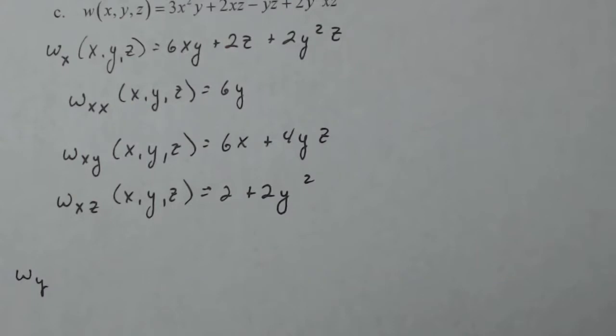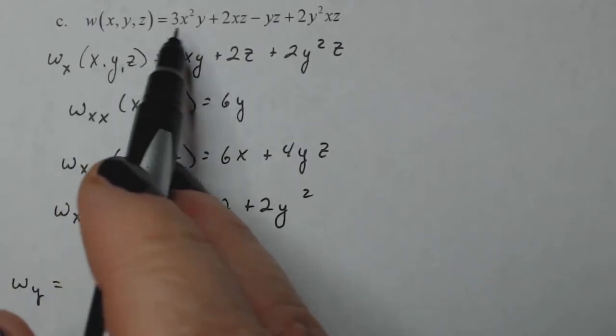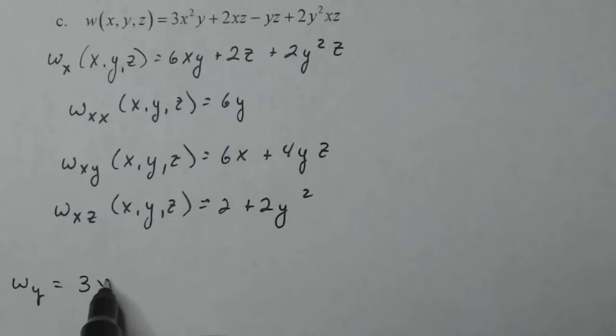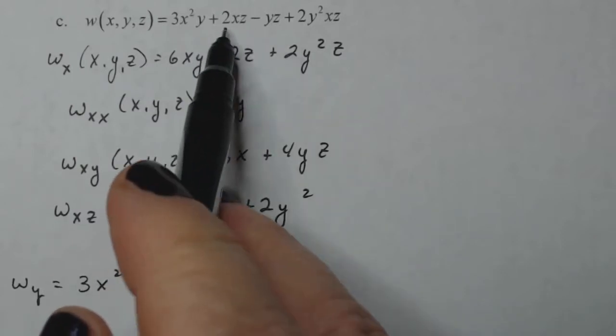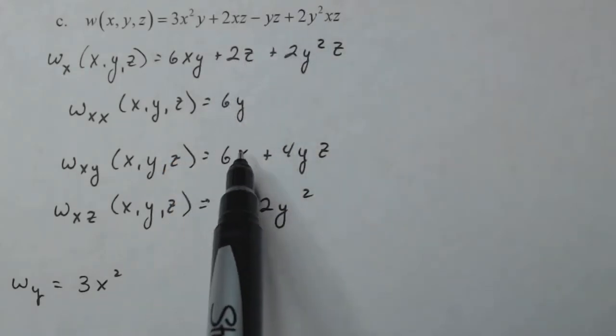All right, so this one's not too bad because it's just polynomial. But you still have to focus. So W sub Y, derivative with respect to Y. So there's a Y here. Those are constants. So three X squared. There's no Y here. There's a Y here. So I might have had a sign error here.